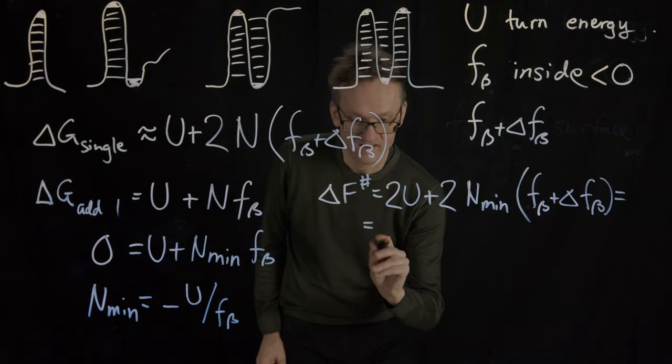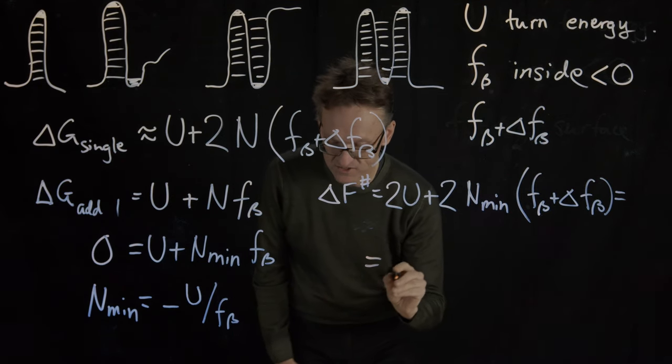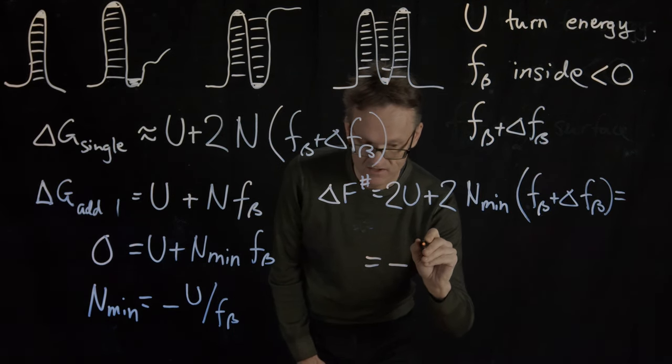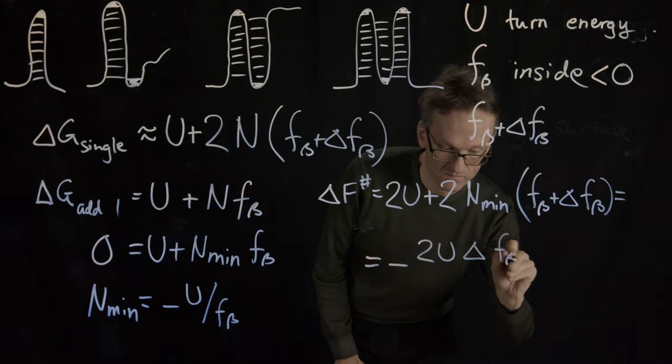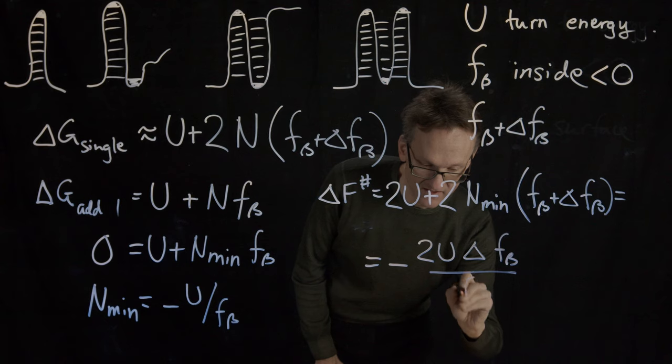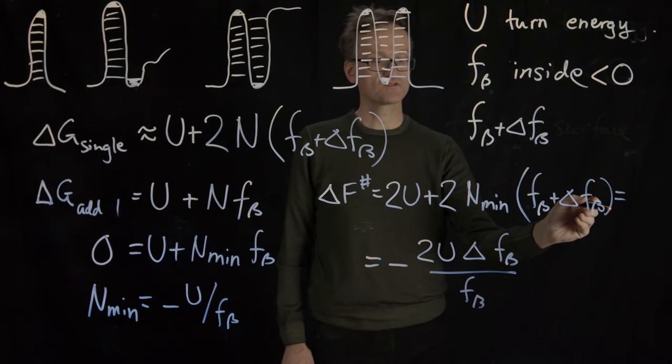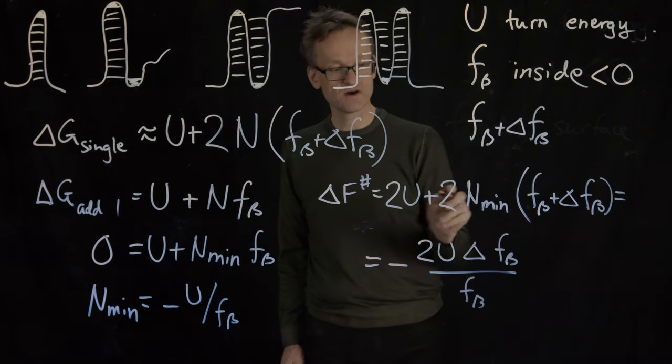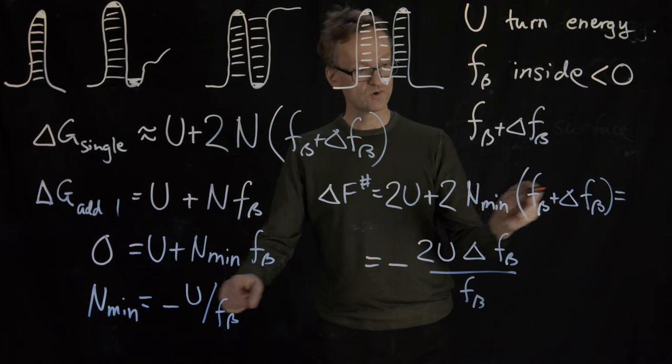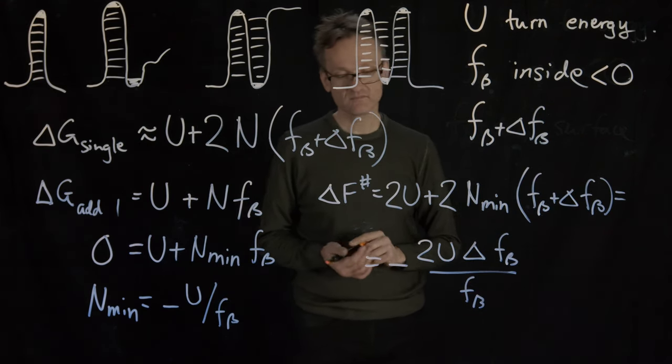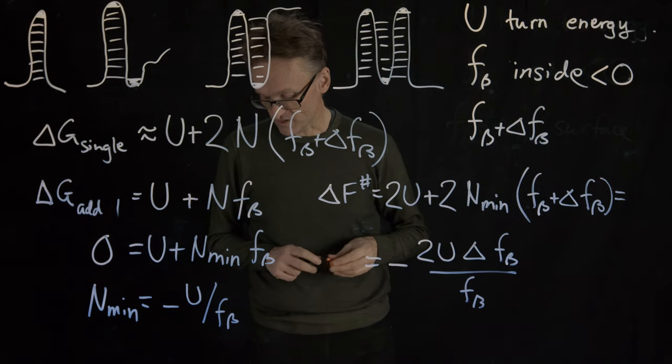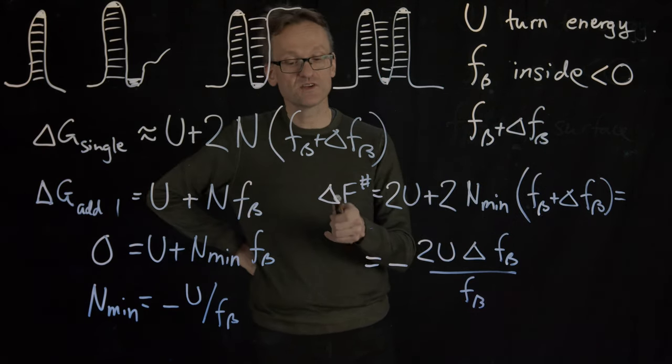So ΔF‡ is just going to be equal to minus two U times Δf_β divided by f_β. That term remains and there was a minus sign so minus two U f_β Δf_β divided by f_β.